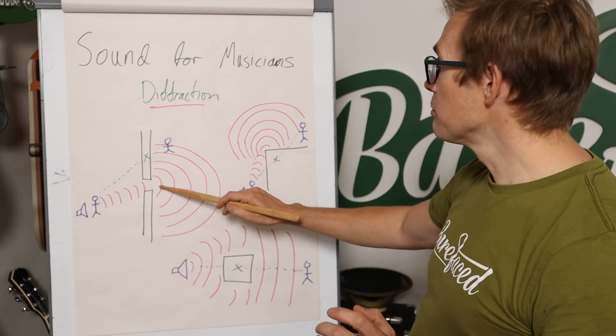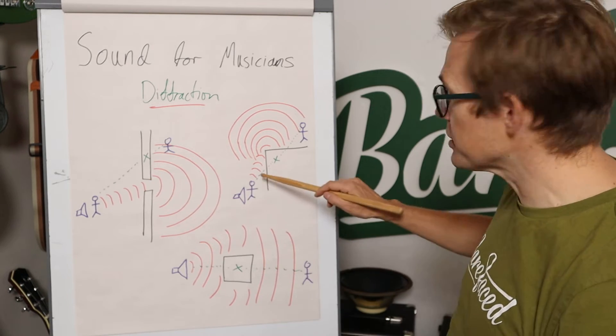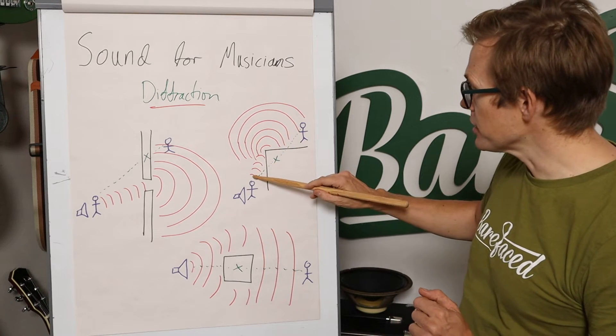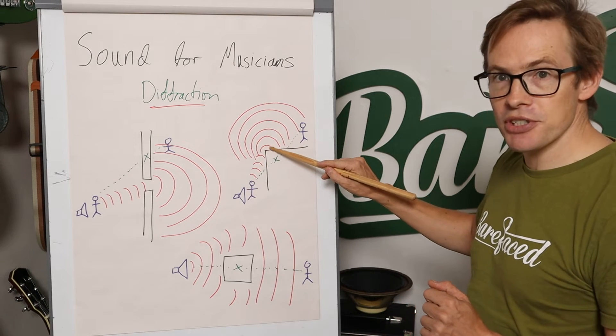So you get diffraction through holes, slits, gaps, whatever. You get diffraction round corners, and this is quite interesting because the corner becomes an extra sound source.